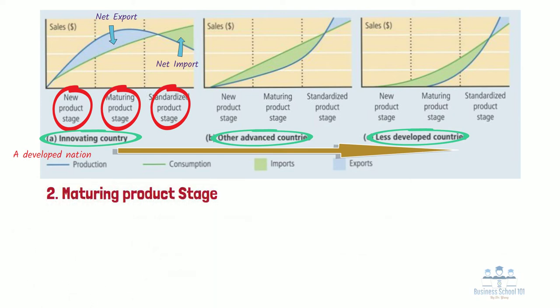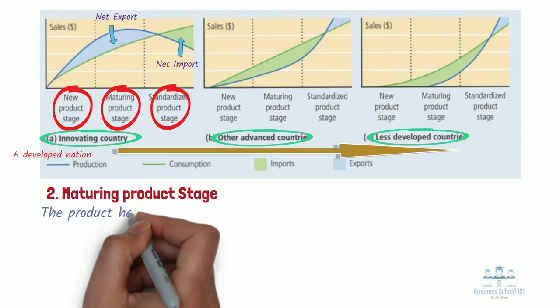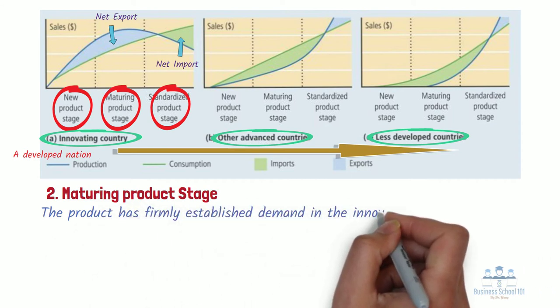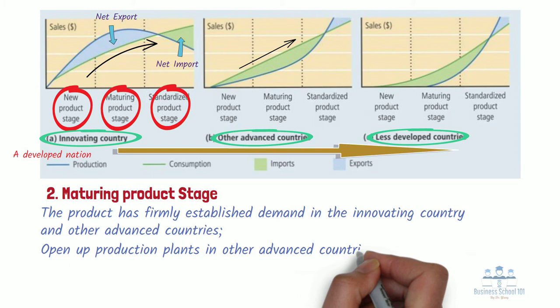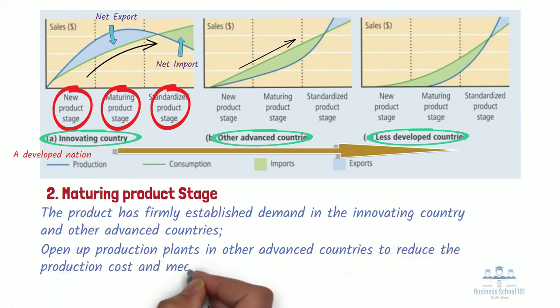Second, the maturing product stage. At this point, when the product has firmly established demand in the innovating country and other advanced countries, the manufacturer of the product will need to consider opening up production plants in other advanced countries to reduce the production cost and meet the increasing demand. Meanwhile, the product development in the innovating country can still occur at this stage because there is still some room to adapt and modify the product if needed. Although the unit costs have decreased due to the decision to produce the product in other advanced countries, the manufacturer of the product will still require a highly skilled labor force.